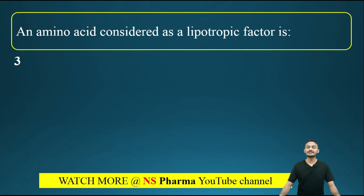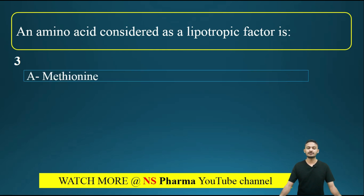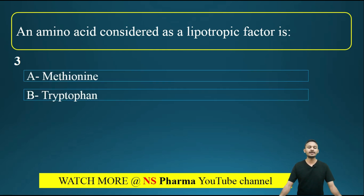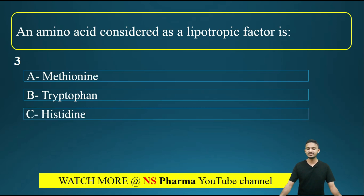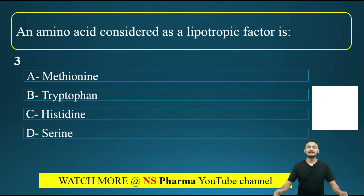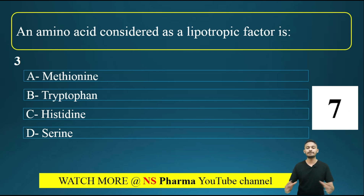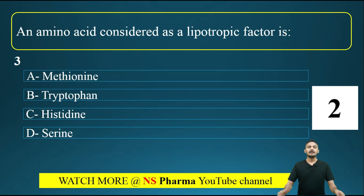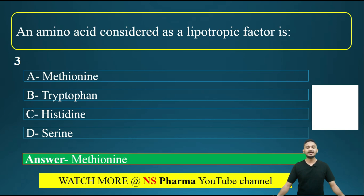Question number 3: which amino acid is considered a lipotropic factor? Options are: option A, methionine; option B, tryptophan; option C, histidine; option D, serine. The correct answer is option A, that is methionine. Methionine is considered a lipotropic factor.